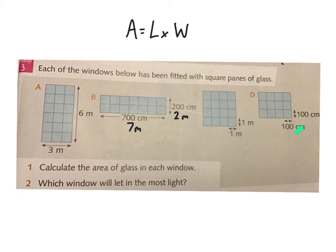And with D, look at the units and remember the tip I gave you for B. If you work out those correctly, question 2, which window will let in the most light, should just be common sense.